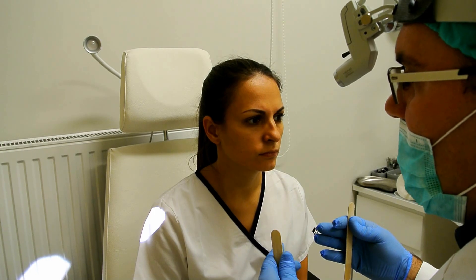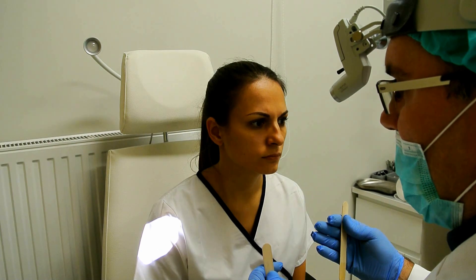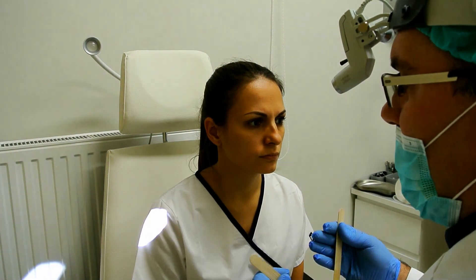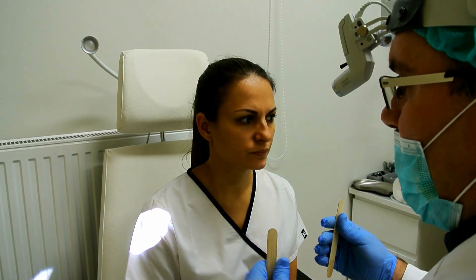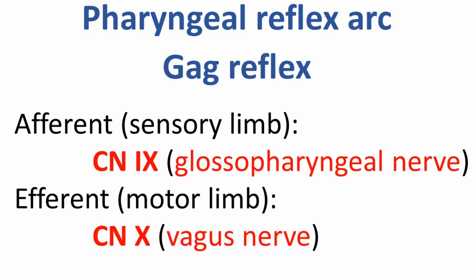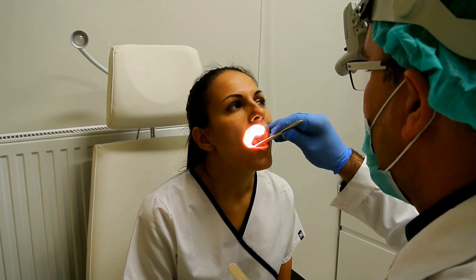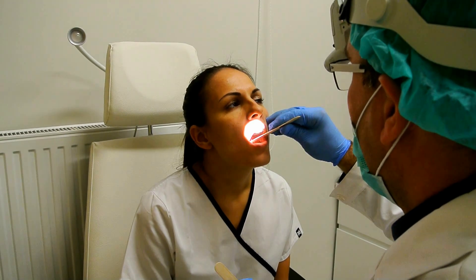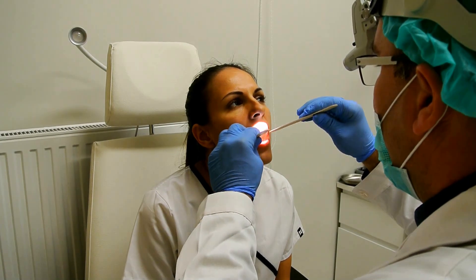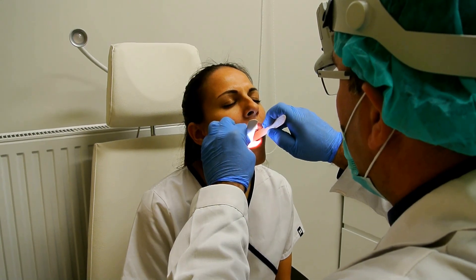The motor innervation is provided by the vagus nerve, whereas sensory innervation is by the glossopharyngeal nerve. In case of right-sided glossopharyngeal or motor vagus nerve palsy, the uvula would deviate to the left side — opposite to the side of the palsy. The gag reflex can be triggered by touching the pharyngeal arches or lateral oropharyngeal wall; normally it is symmetric and the uvula stays in the midline.